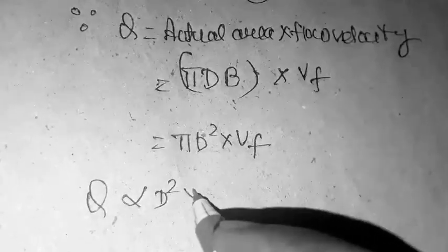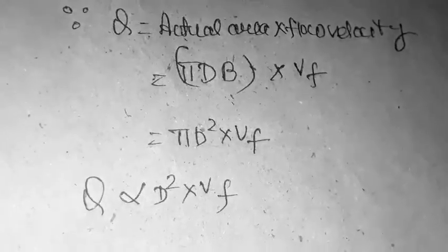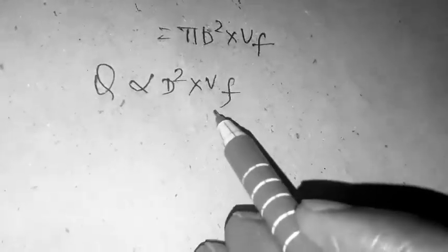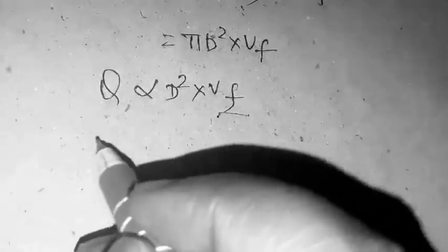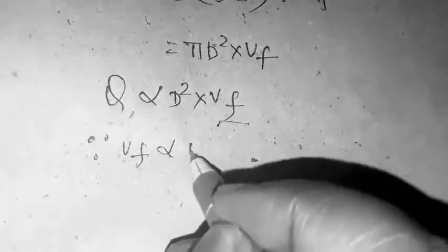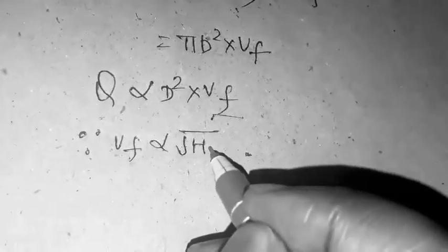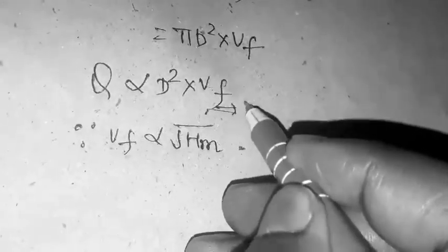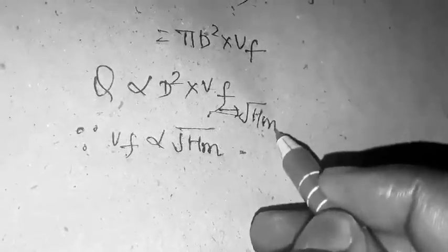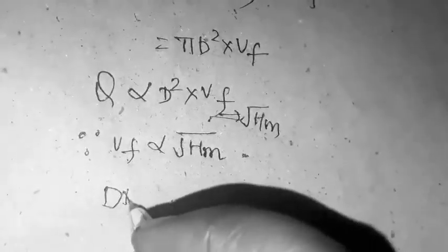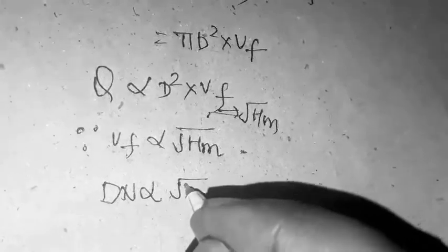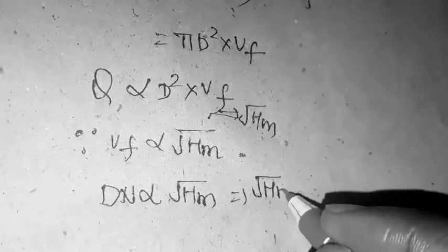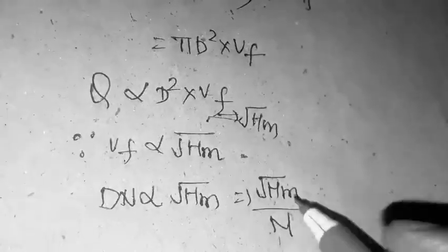VF is directly proportional to the tangential velocity, which is under root HM. D is directly proportional to under root HM upon N. So D is directly proportional to under root HM upon N. This is equation number 2.